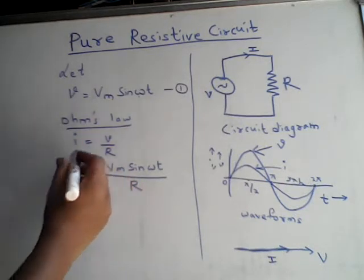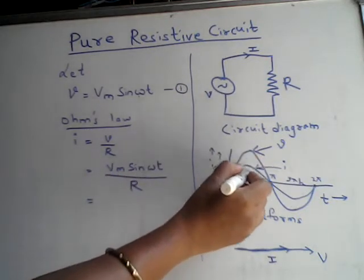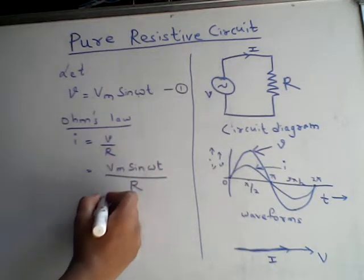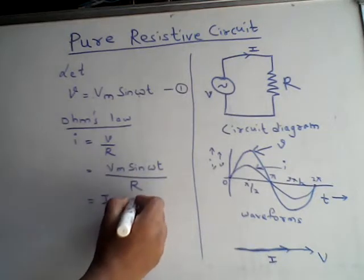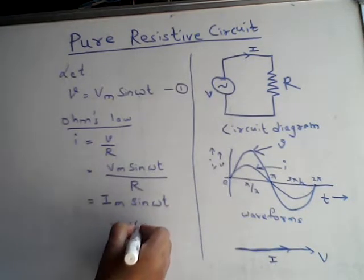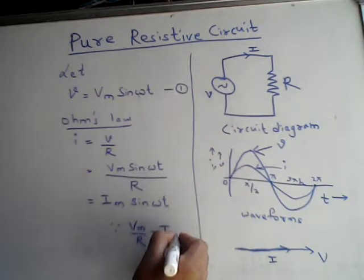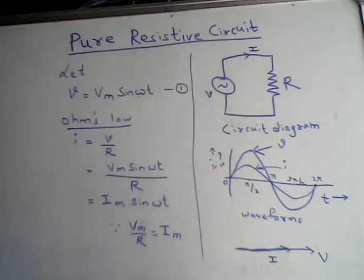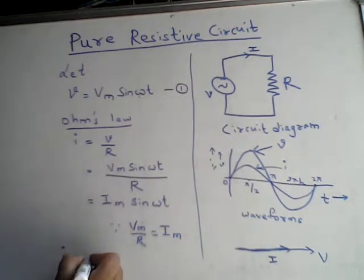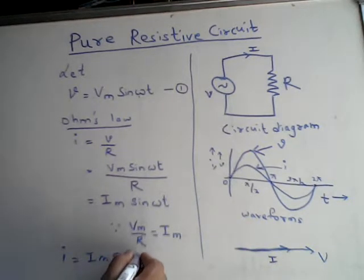This gives the instantaneous current. Here Vm/R is nothing but Im, the maximum value of current. So the instantaneous current i can be represented as i = Im·sin(ωt).